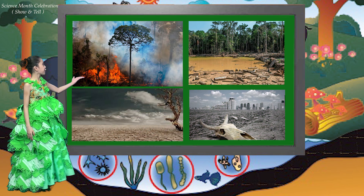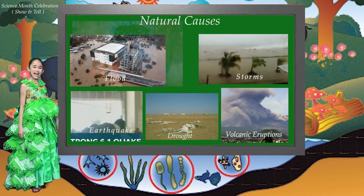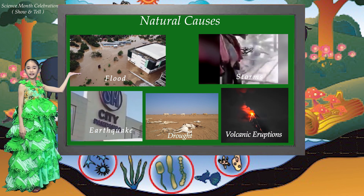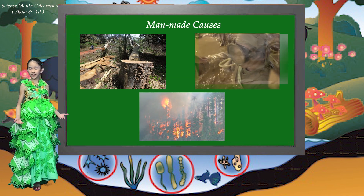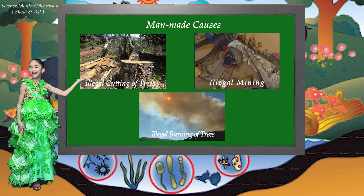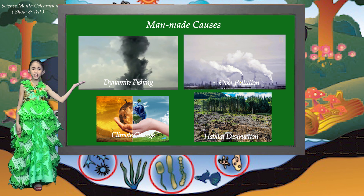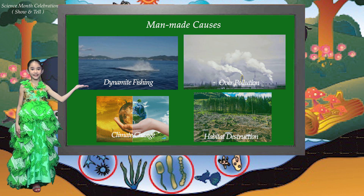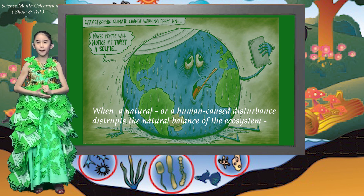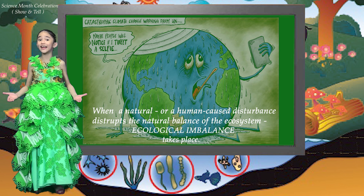But what happens to our ecosystem right now? It has been destroyed due to many causes. First, natural causes like flood, severe storms, earthquake, drought, and volcanic eruptions. Another is man-made causes like illegal cutting of trees or deforestation, illegal mining, illegal burning of trees, dynamite fishing, overpollution, climate change, and habitat destruction. When a natural or human-caused disturbance disrupts the natural balance of the ecosystem, ecological imbalance takes place.